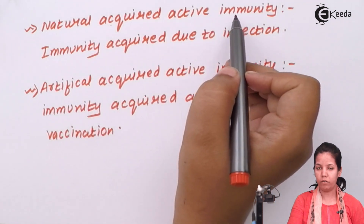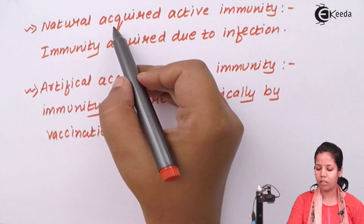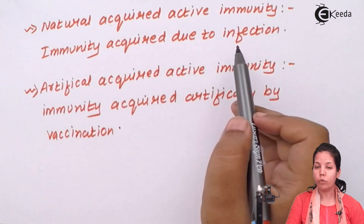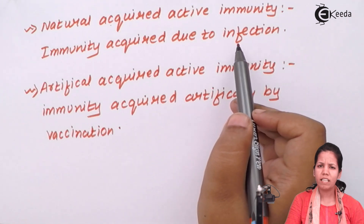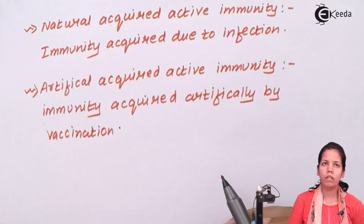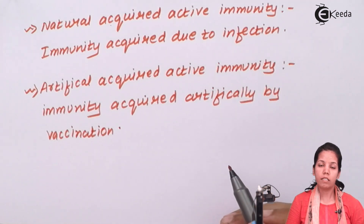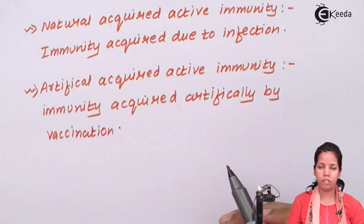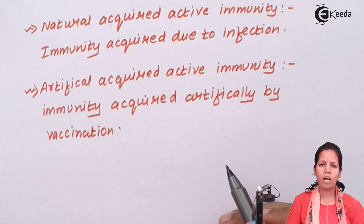Naturally acquired active immunity means immunity that was acquired due to an infection. For example, if you have got certain infections such as measles or chickenpox — once you get chickenpox once in your lifetime, there are no other chances of getting chickenpox again.